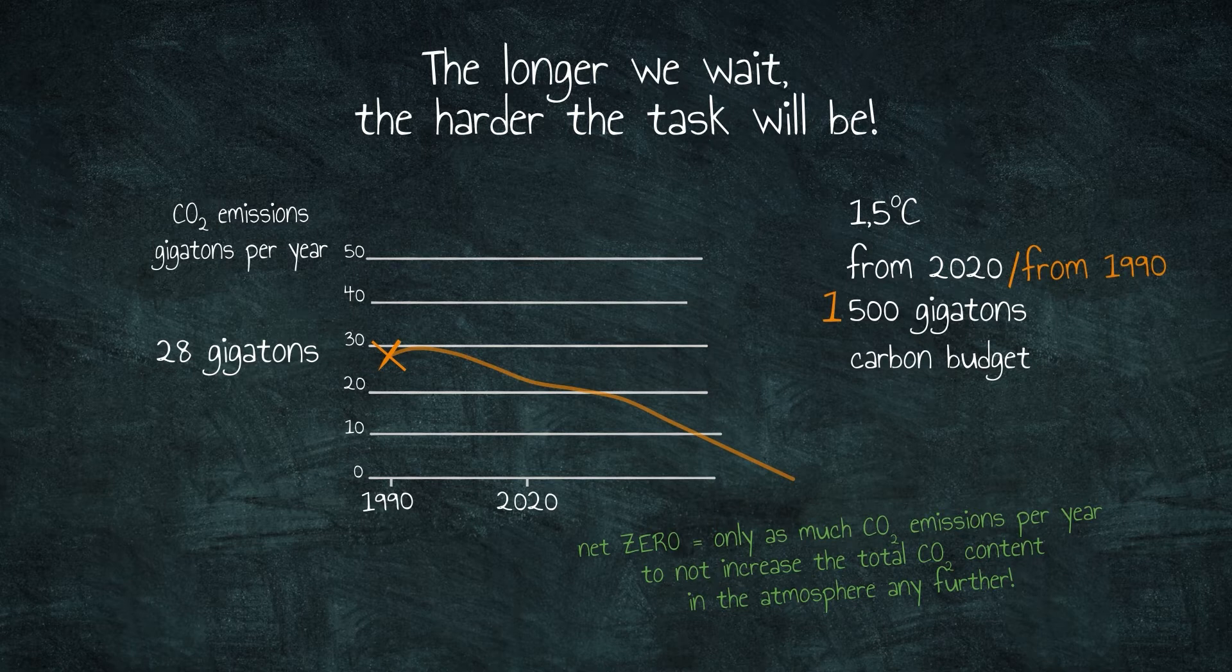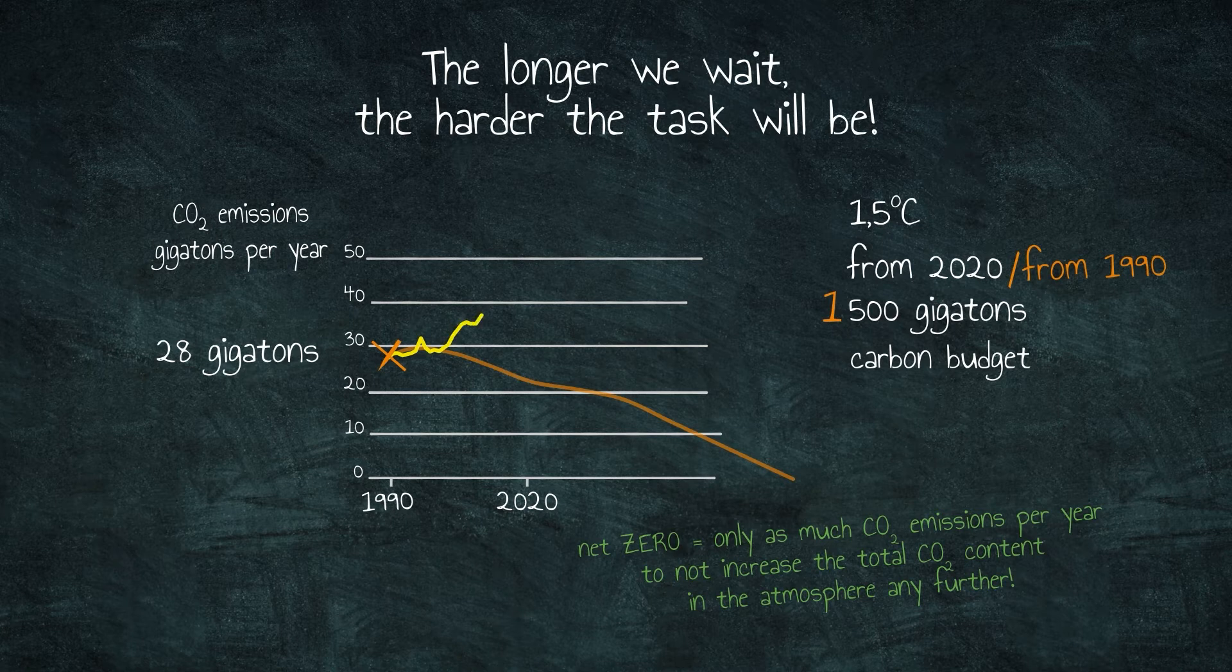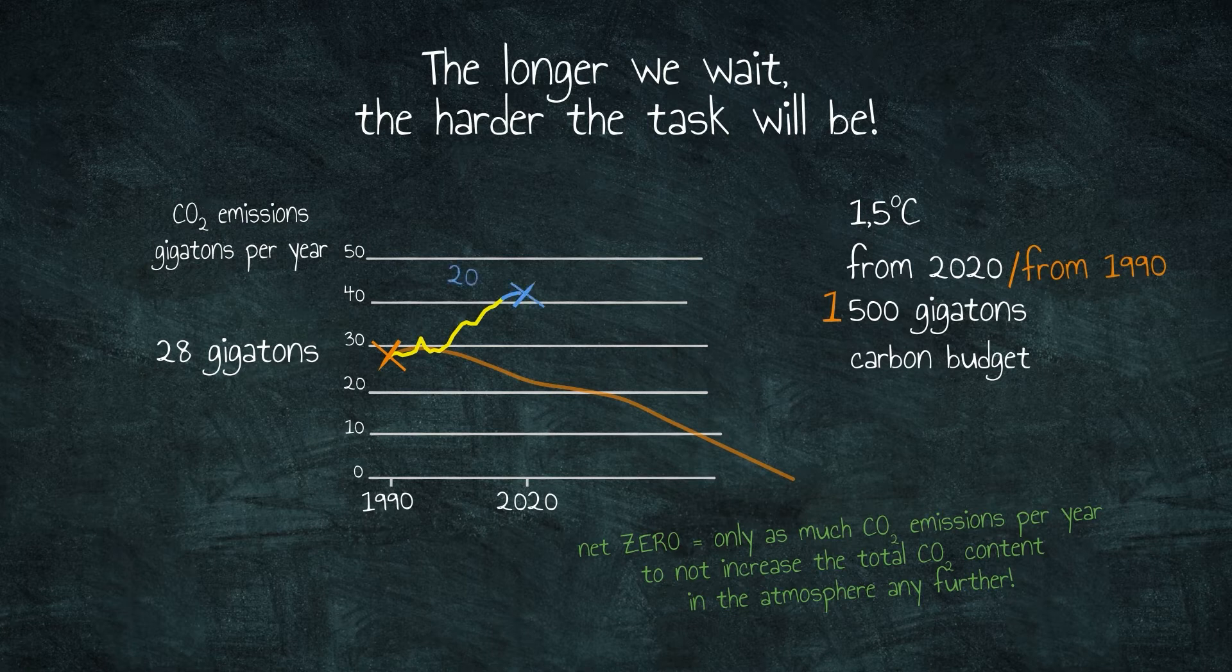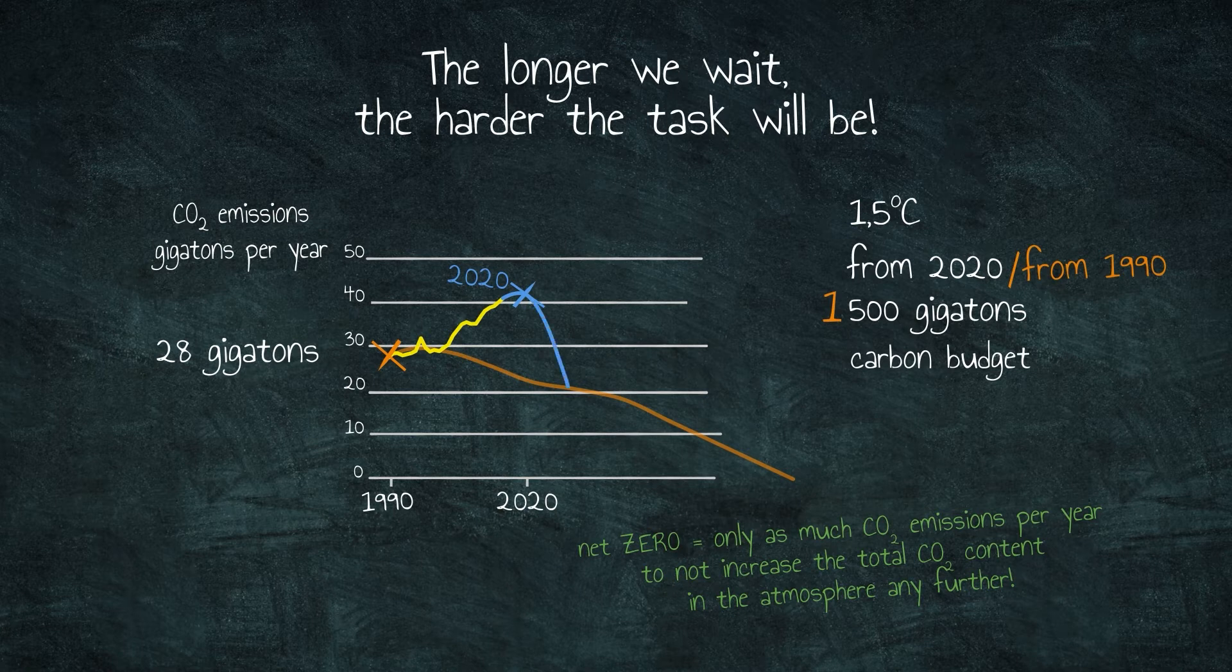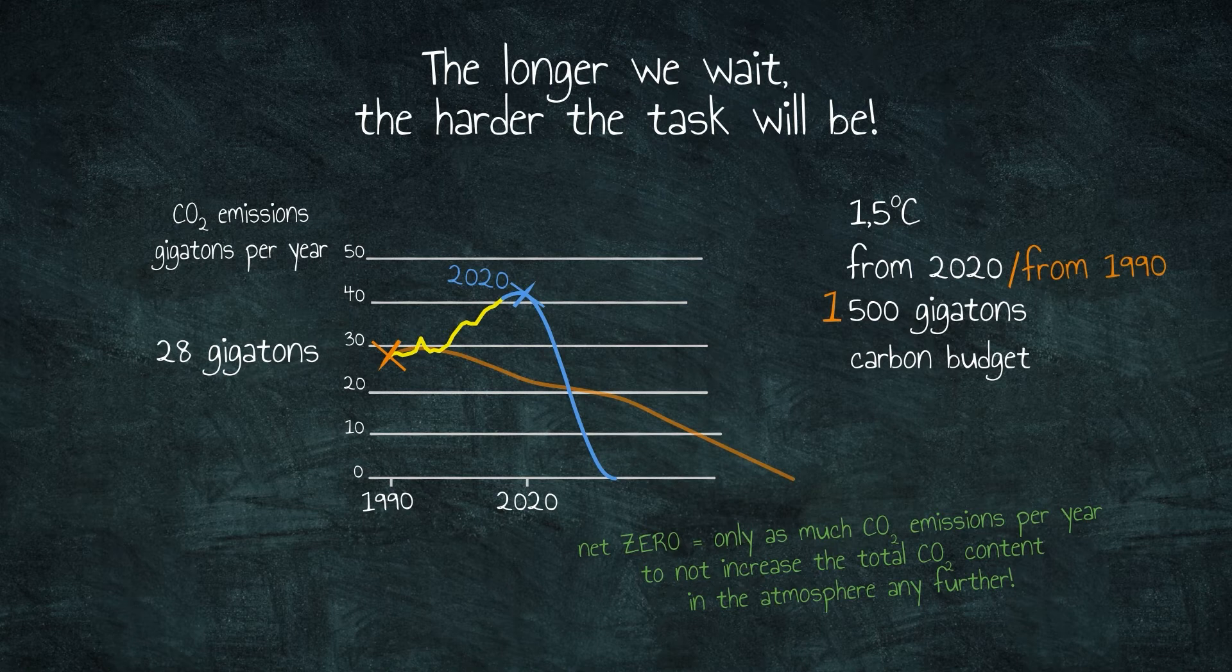Instead, CO2 emissions have continued to rise. Industrialized countries have not made sufficient reductions, while emerging countries like China and India have caught up to their industrial counterparts. So over these 30 years, we have consumed a large portion of the CO2 budget that was still available in 1990. The result? To reach net zero, we now have to reduce our CO2 emissions faster and with far greater effort in order to maintain a tolerable climate. This is because we are starting at a much higher level and have far less time to stop producing excess CO2.